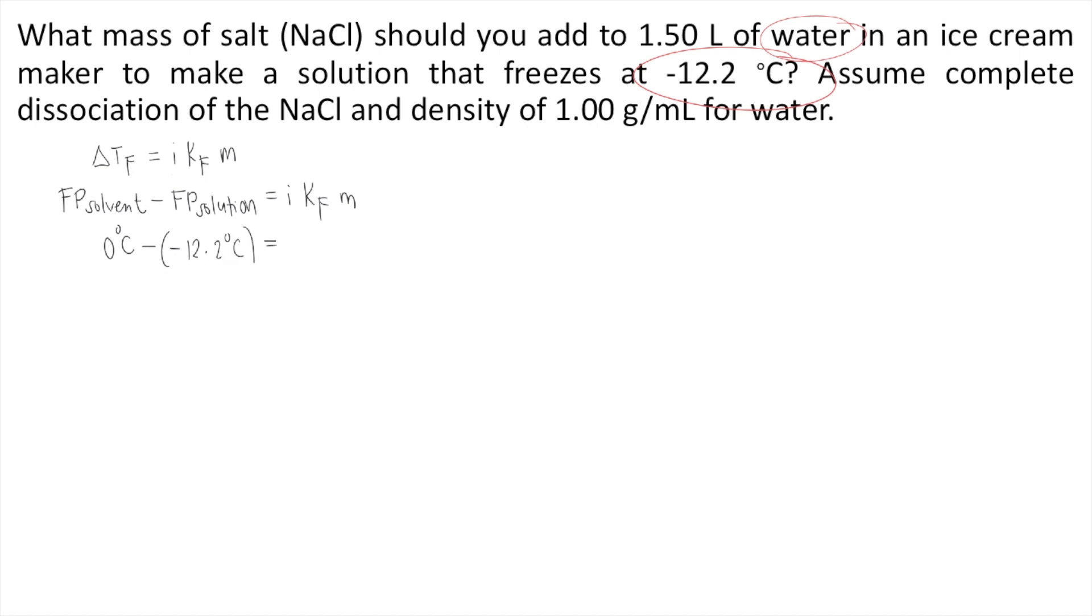And that's equal to I. We know I is called the van't Hoff factor. So how do we know the van't Hoff factor? The problem says assume complete dissociation of the NaCl. So when you put NaCl in water, it dissociates into ions. So what are the ions making up NaCl? We have the sodium ion and the Cl ion. So there are two ions making up NaCl. So your van't Hoff factor, or I, is 2.